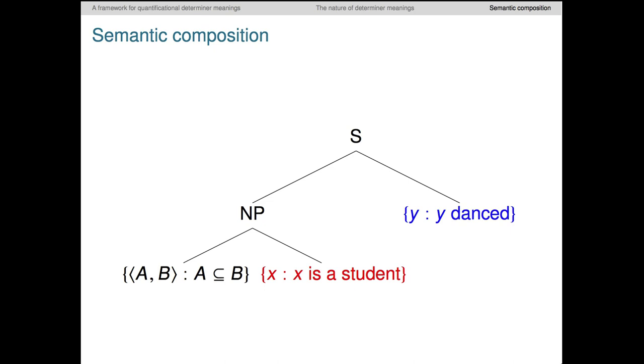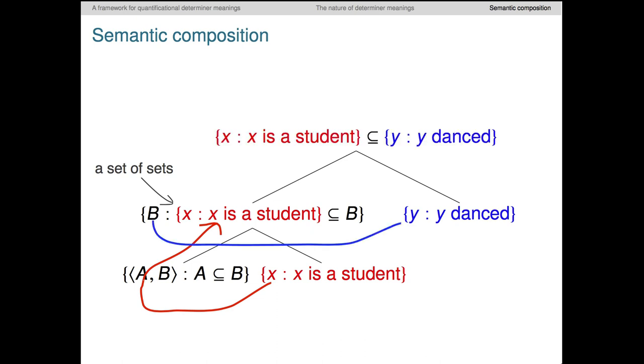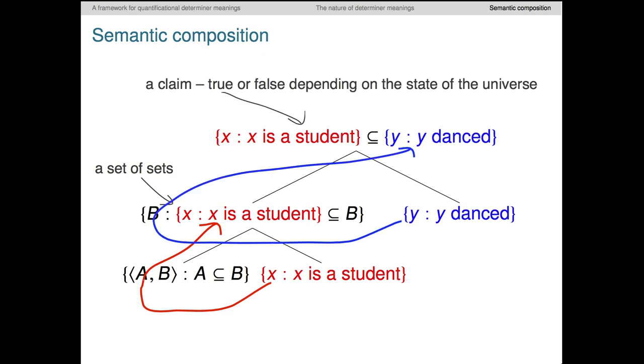And then here's how the determiner combines with its restriction. The A argument drops out of the specification, and the meaning goes in for A in the body of the determiner. The result is a set of sets, namely the set of all sets B, such that the students are a subset of B. Finally, the verb phrase comes in by the same sort of process. We drop the B and substitute for B in the body of the expression. The result is intuitively the claim that the students are a subset of the dancers, which is just a slightly awkward way of saying that every student danced.